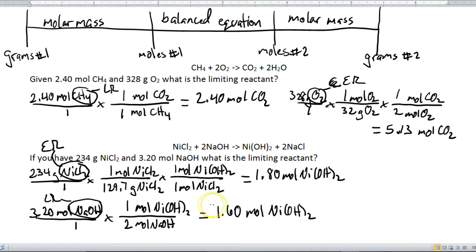Okay, so that's all you do. You take your two givens, convert it into the same product. You compare the two numbers to see which one makes less. And that's your limiting reactant. The one that makes more is the excess reactant.